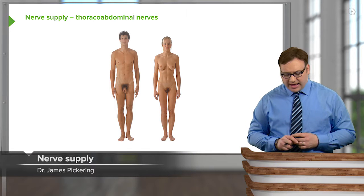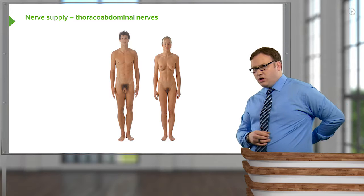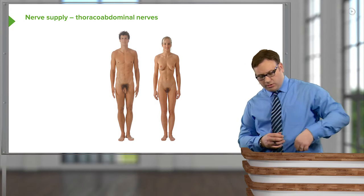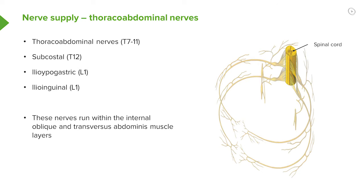The nerves are running from the spinal cord in the vertebral column at your back, running all the way around to supply the musculature. This happens similarly in both male and female — this is just a cartoon of what this looks like. Here we have the spinal cord, and we can see coming off it two pairs of spinal nerves, one here and one here. This happens all the way up and down the spinal cord.